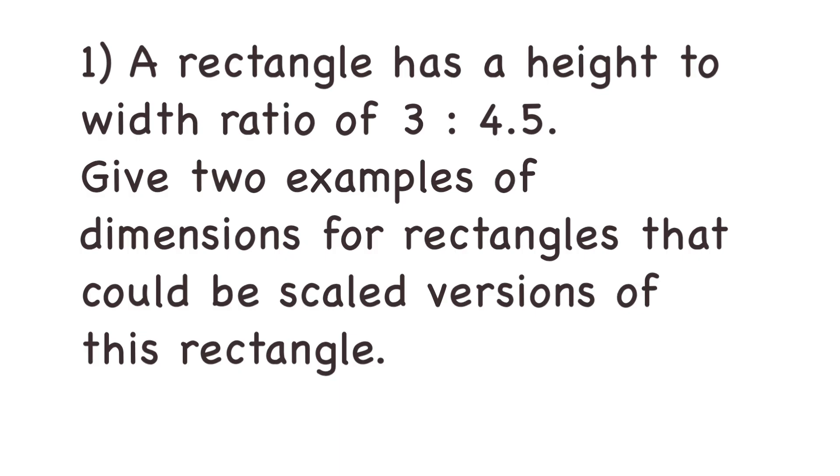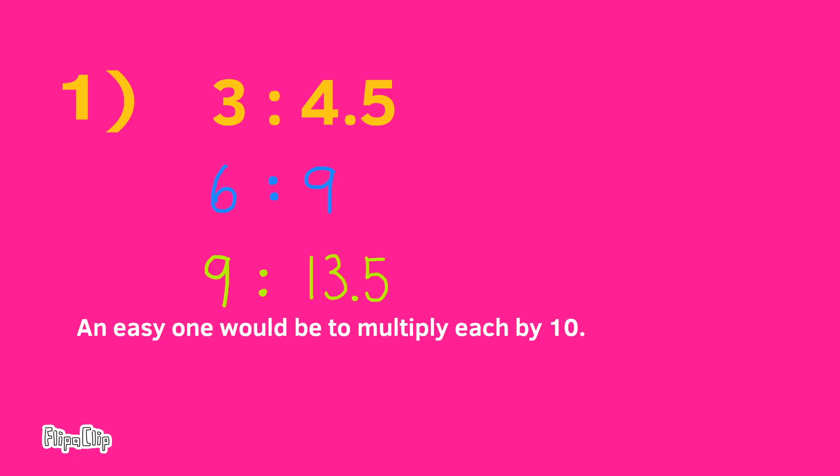Starting with 3 to 4.5, multiply 3 times 2 to get 6, and multiply 4.5 times 2 to get 9. We can multiply 3 by 3 to get 9, and 4.5 by 3 to get 13.5. An easy one: multiply each by 10. 3 times 10 is 30, and 4.5 times 10 is 45.